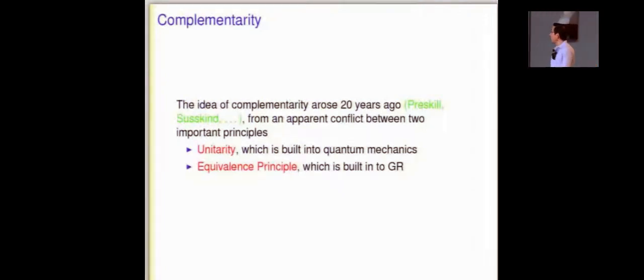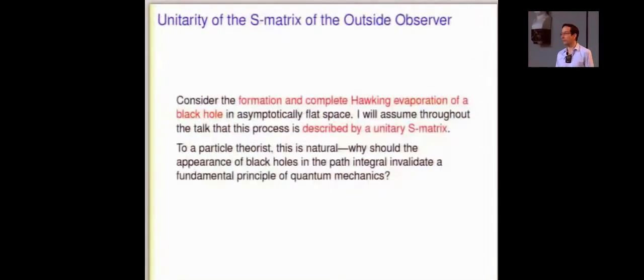The idea of complementarity came suspiciously enough precisely from the first conflict between unitarity and the equivalence principle. We're going to think about a black hole that forms from a pure state and its complete Hawking evaporation after a timescale R cubed. And what's non-negotiable is that I will assume throughout this talk that this is described by a unitary S matrix. And I would think that in this audience, I'm going to get away with that assumption. In any case, without that assumption, no paradox.